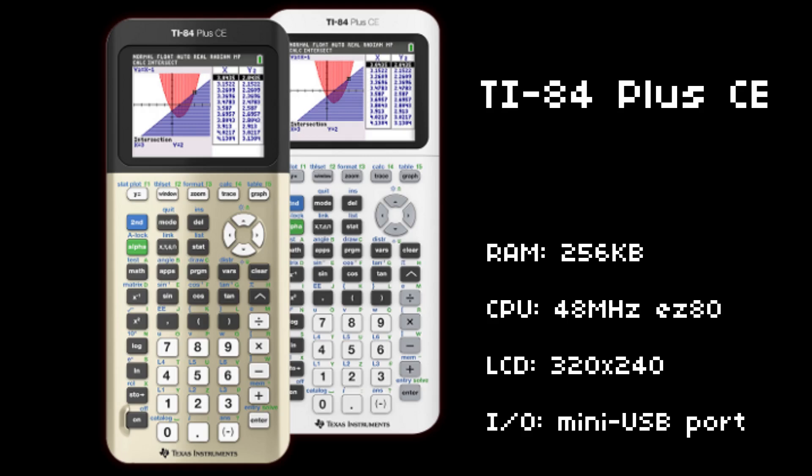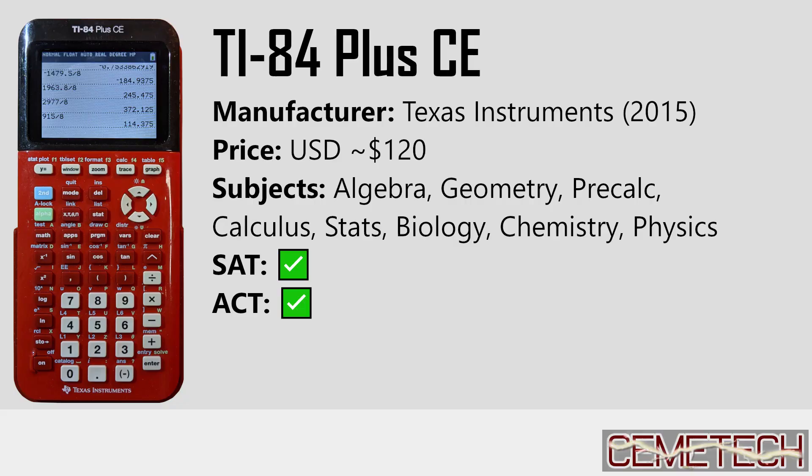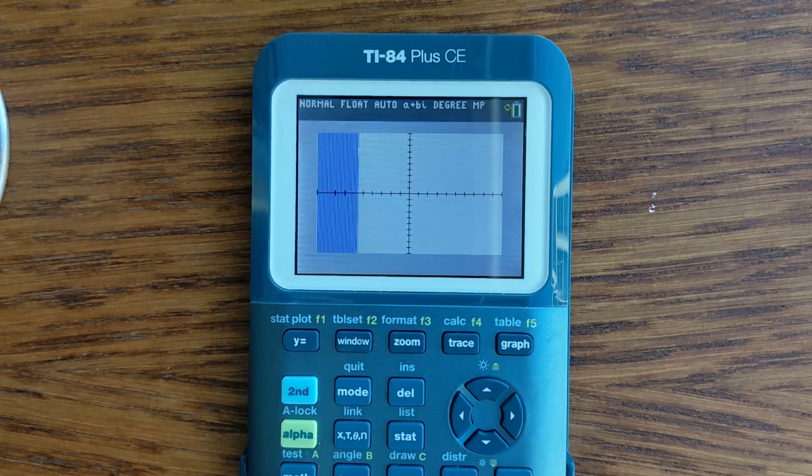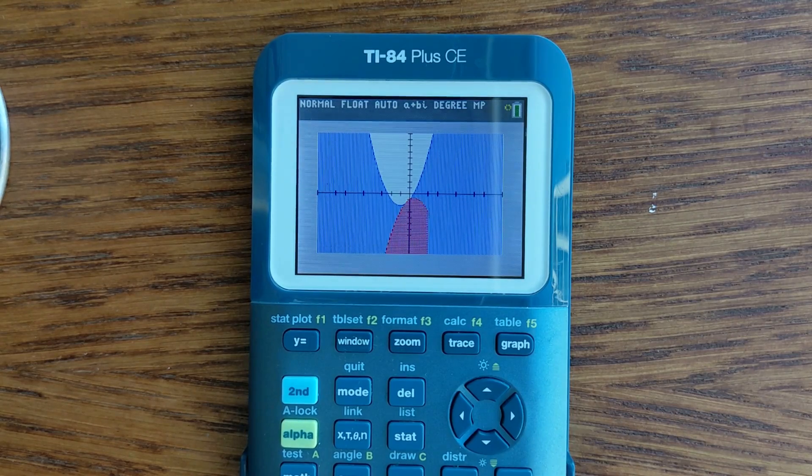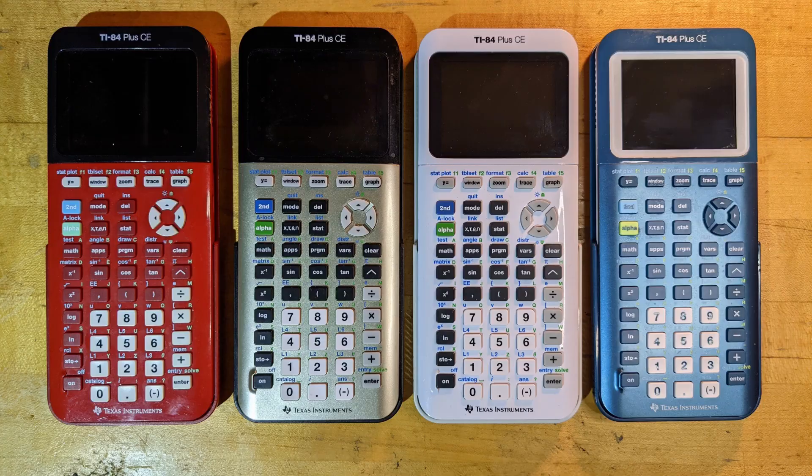The TI-84 Plus CE is a 2015 improvement to the well-loved TI-83 Plus and TI-84 Plus family of calculators that adds a color screen and a bit more memory and processor power compared to the older black and white graphing calculators. But it's not much. The device you're watching this video on has thousands of times the computational power and memory of even this more advanced calculator.